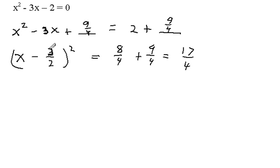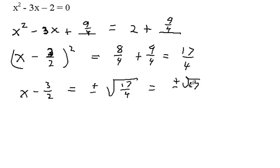I've got the situation of something squared equals 17 fourths. So I take the square root of both sides, and I get x minus 3 halves equals plus or minus the square root of 17 fourths. I can simplify that. The square root of 17 over the square root of 4 releases that 4 into a 2, and I get plus or minus the square root of 17 over 2.